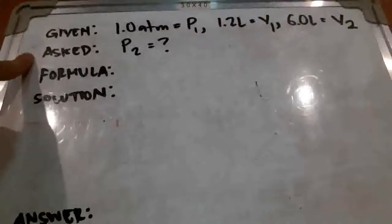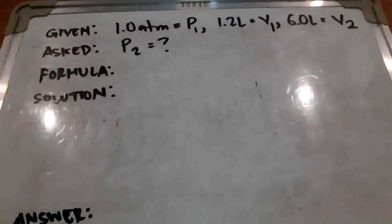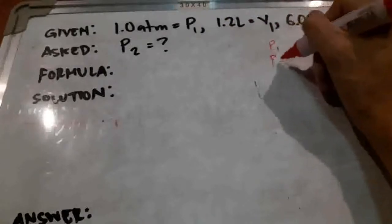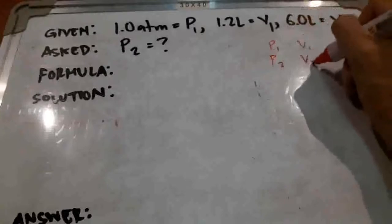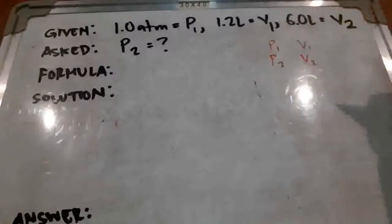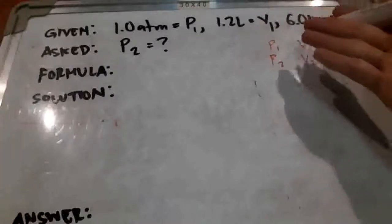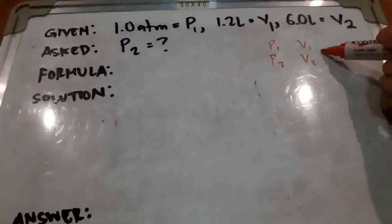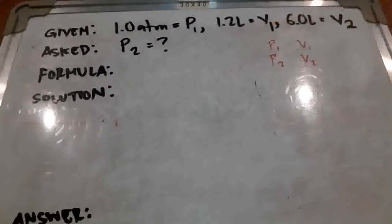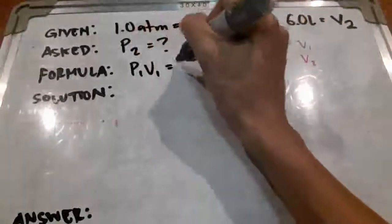Now, once you have your given and you're asked for, you have a list of variables that you can use to narrow down what formula you should use. So we have P1, we have V1, we have P2 that is asked for, and we have V2 that is given. So what formula do we have that uses these quantities, P1, V1, and P2, V2? That's Boyle's Law. And so once you have your given and you're asked for, you should be able to figure out what formula you have to use. Since we have so many gas law formulas, this allows you to narrow down what formula to use. In this case, we're using Boyle's Law, which is P1V1 equals P2V2.